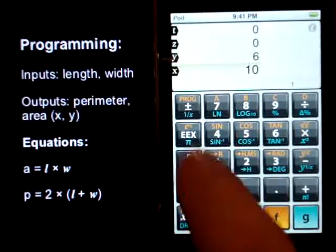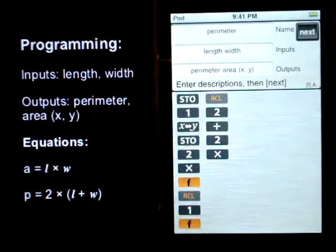To look at the program, we go F, program. There it's sitting there in A. And that is our program listing.